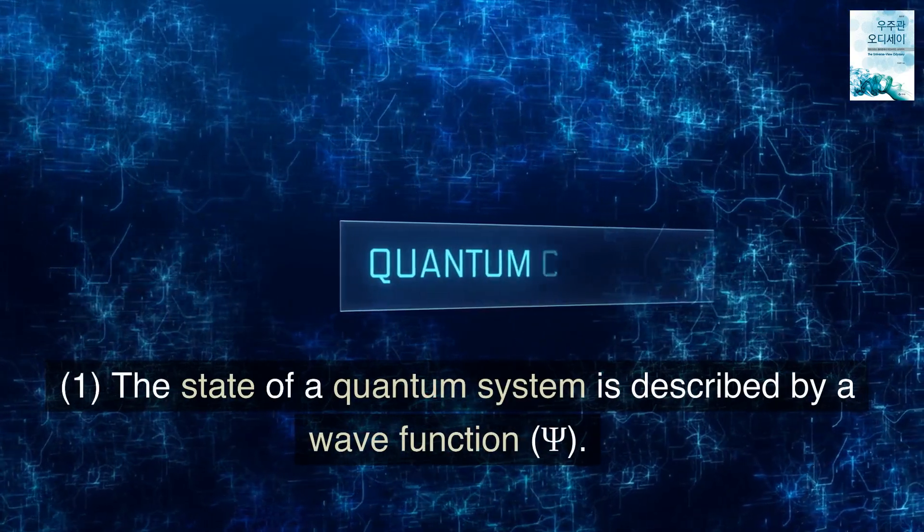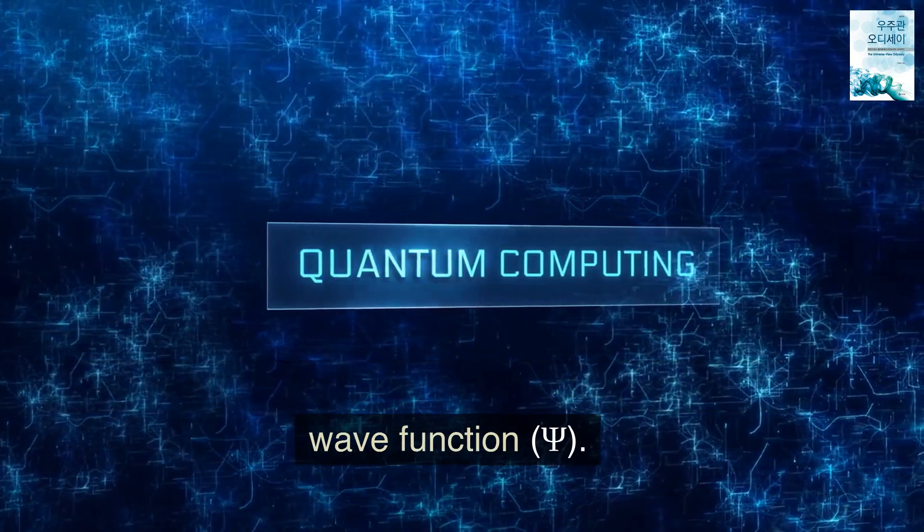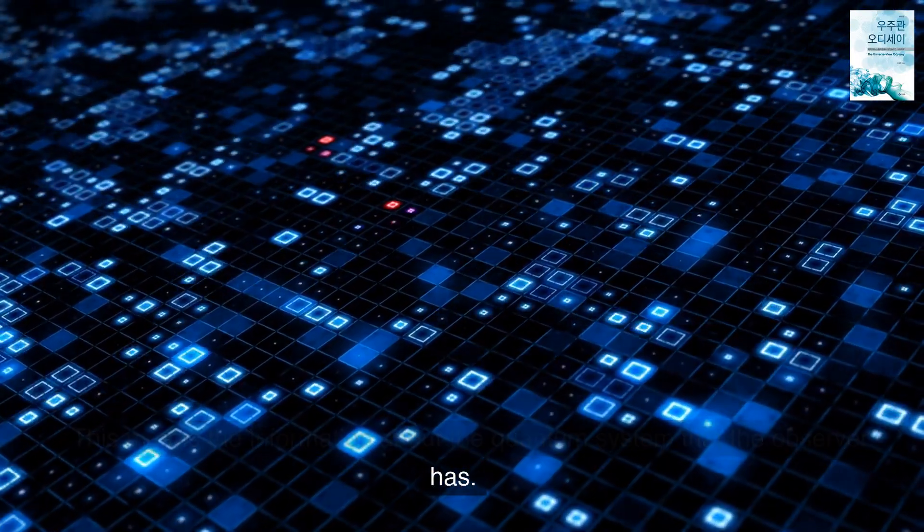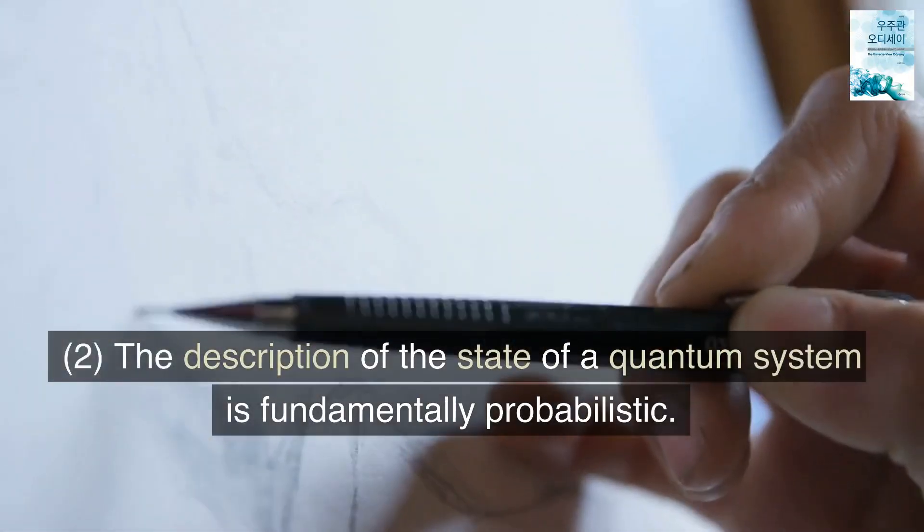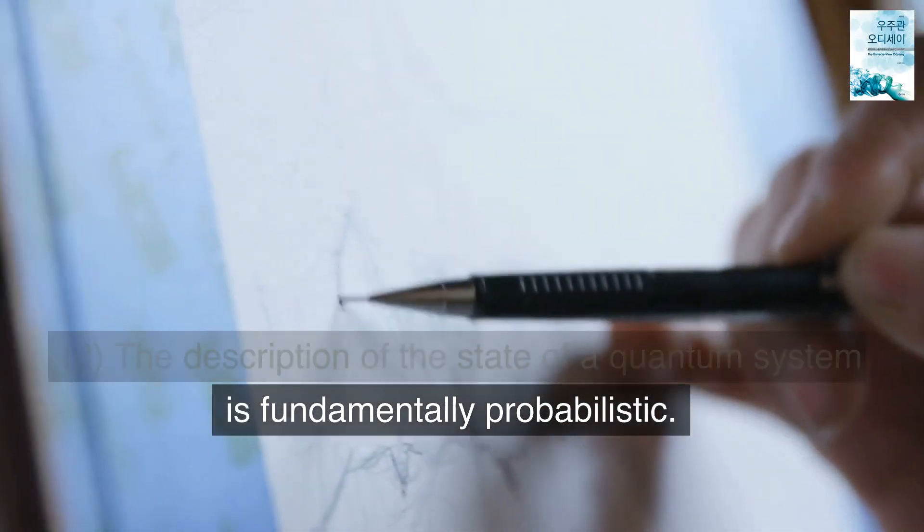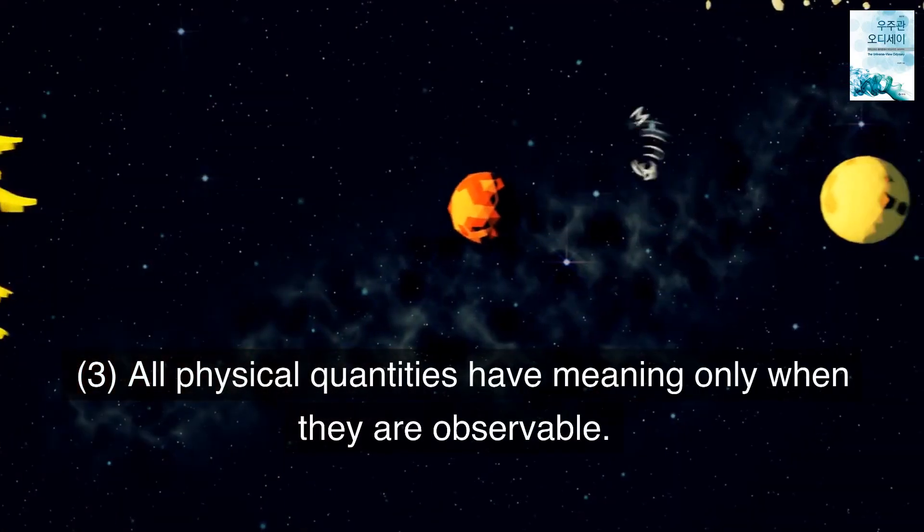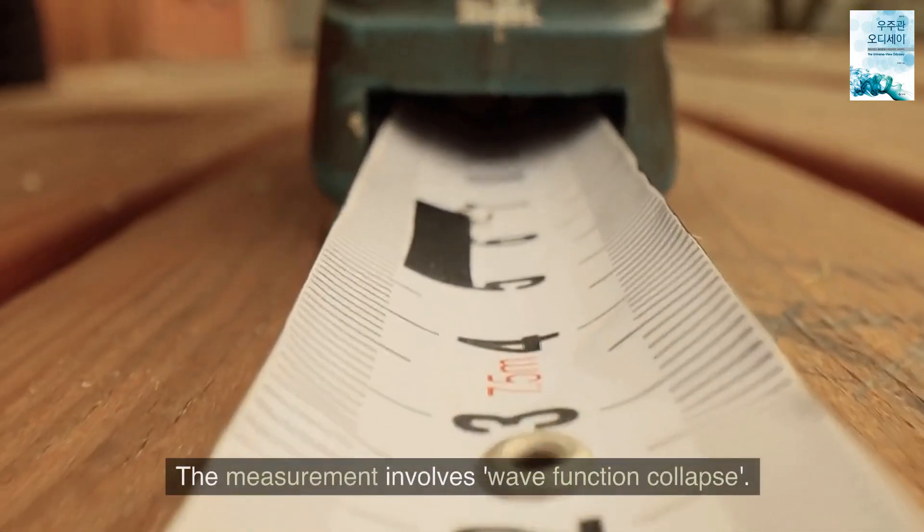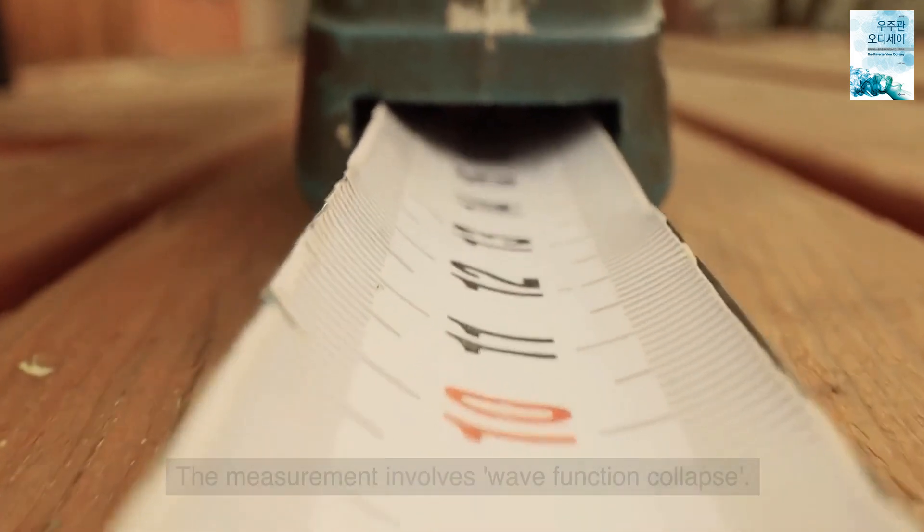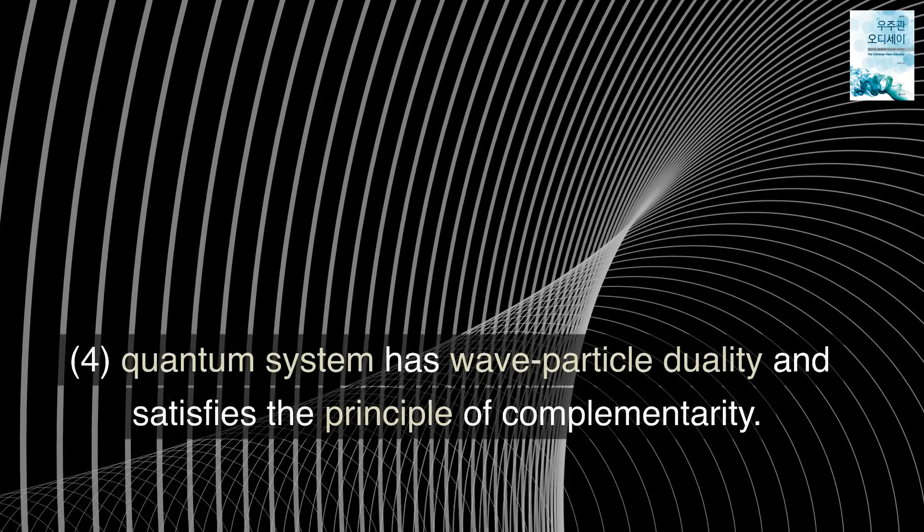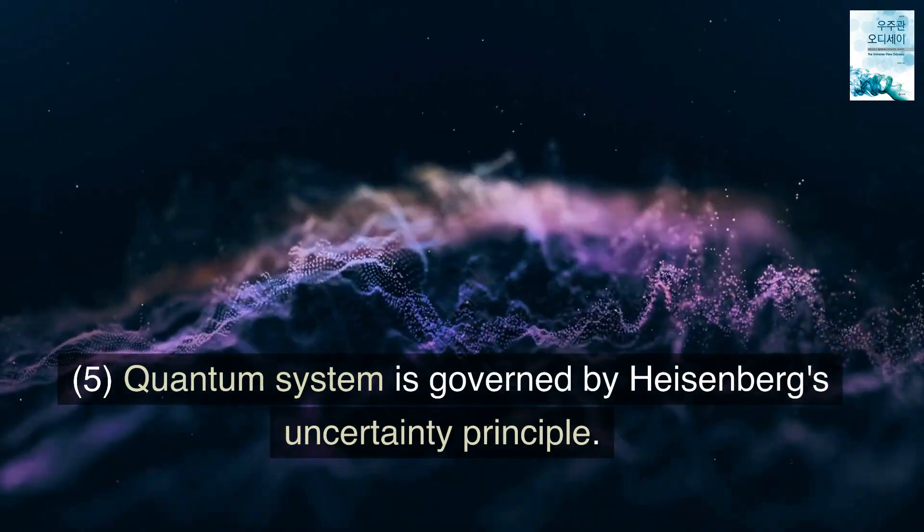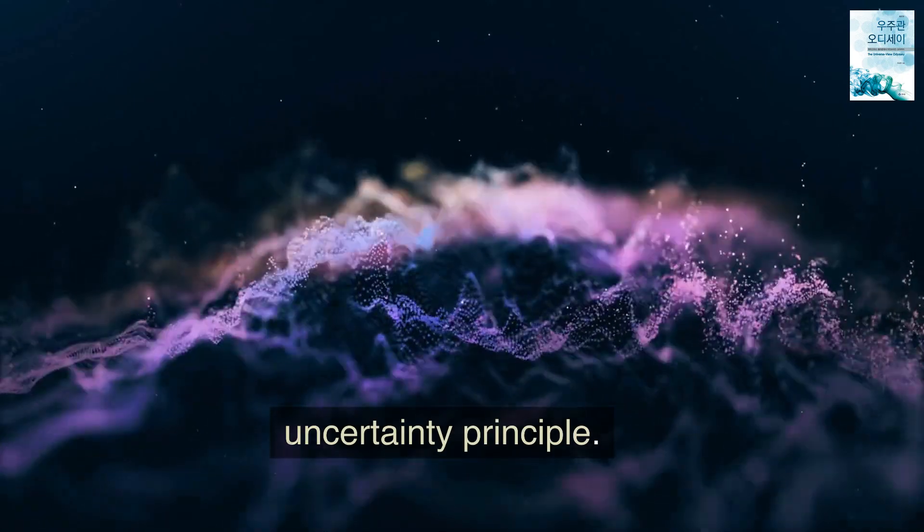1. The state of a quantum system is described by a wave function, psi. This means the information about the quantum system that the observer has. 2. The description of the state of a quantum system is fundamentally probabilistic. 3. All physical quantities have meaning only when they are observable. The measurement involves wave function collapse. 4. Quantum system has wave-particle duality and satisfies the principle of complementarity. 5. Quantum system is governed by Heisenberg's uncertainty principle.